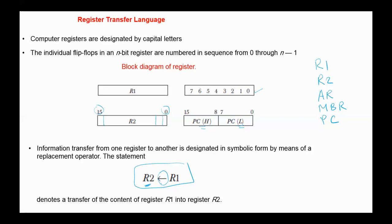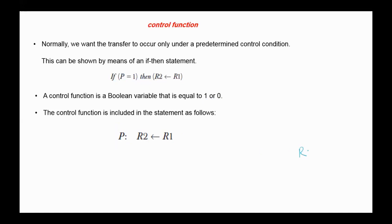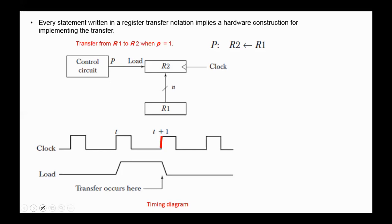So the contents of the two registers after the replacement are the same. Normally, we want the transfer to occur only under a predetermined control condition. For example, we want the transfer from register R1 to R2 to occur only if the condition is true or the control signal B equals 1. A control function is a boolean variable equal to 1 or 0. A boolean function can be expressed as well — for example, we want to transfer register R1 to register R3 if the condition x·y is true.